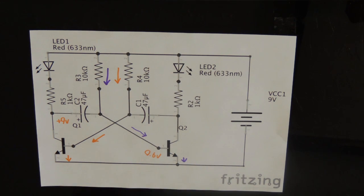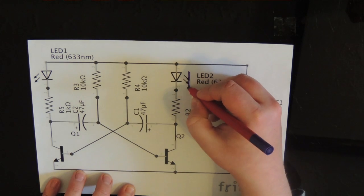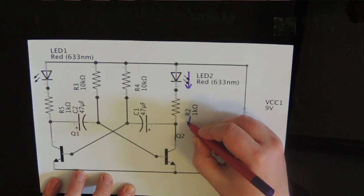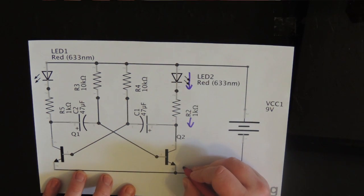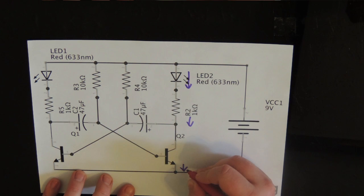Let's say that Q2 turns on first. Current now flows through the LED, through the current limiting resistor and out of the emitter of Q2.